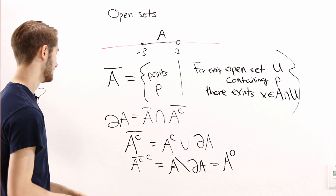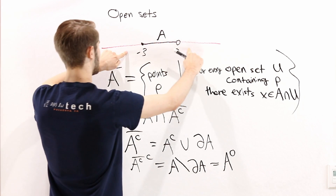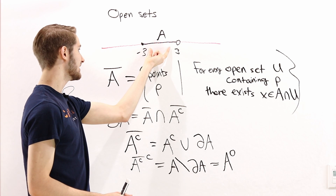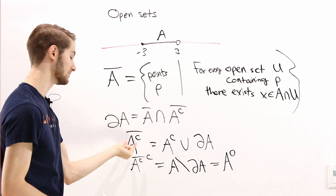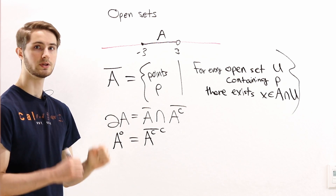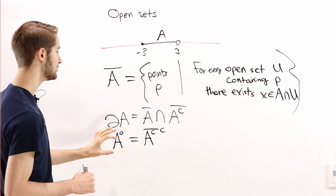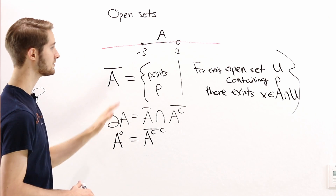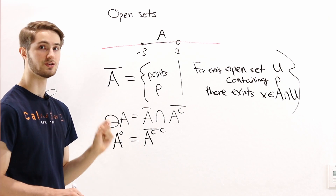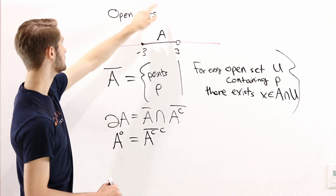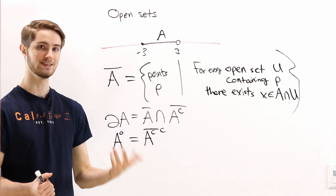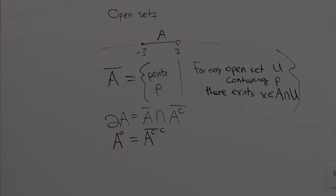So we can get the interior by taking the closure of the complement and then taking the complement of that — giving us everything inside the set except the boundary points. These are the formulas for the closure, boundary, and interior. The closure plays a key role because the boundary and the interior can both be defined in terms of the closure. And the closure is found using adherence points, relying on the open sets from topology, which lets us say whether two points are close without needing a distance function.